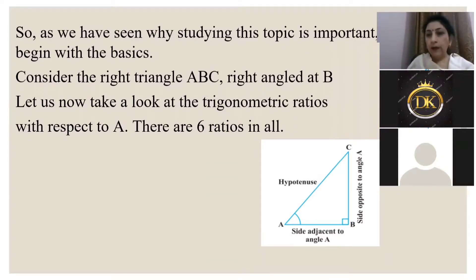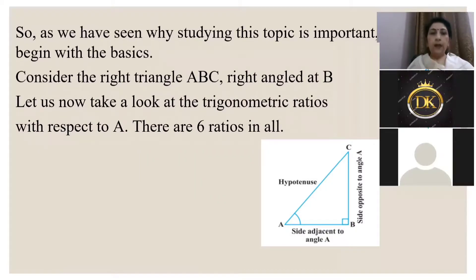What about cosine? Adjacent side upon hypotenuse. And tan? Opposite upon adjacent. These are the three main ratios that we did.